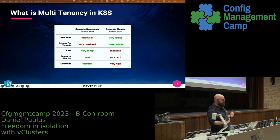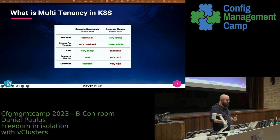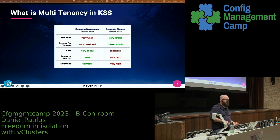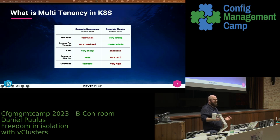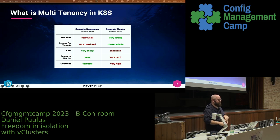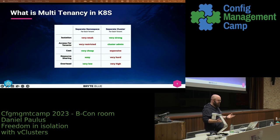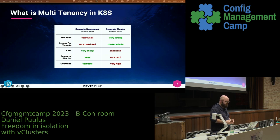If we look at cost: if I only have one cluster shared over all the resources, it's cheap. I don't need a lot of team members to maintain every cluster, we do less operations and patching, so it's cheaper to run a single cluster than multiple ones. Resource sharing in a single cluster is really easy — you can simply connect to a service and access a different tenant's data, which might be a problem. In a separate cluster that's hard because you need to think about networking, firewalls, and such. General overhead with one cluster is very low, there's less security risk, it's easier to maintain and patch.